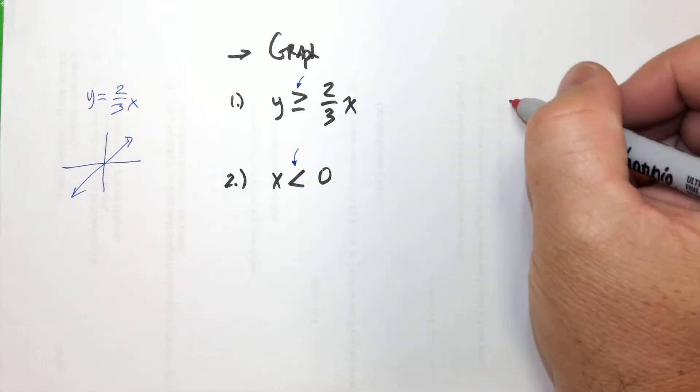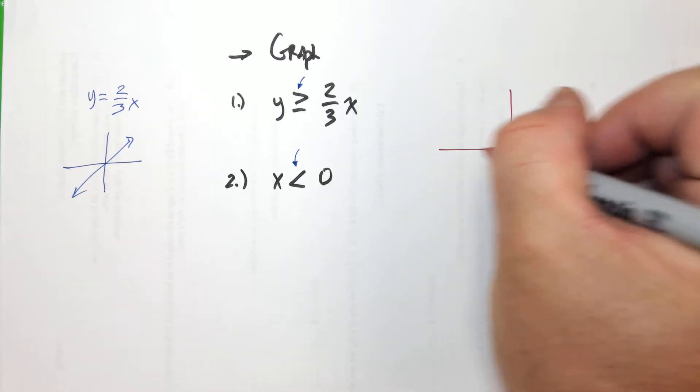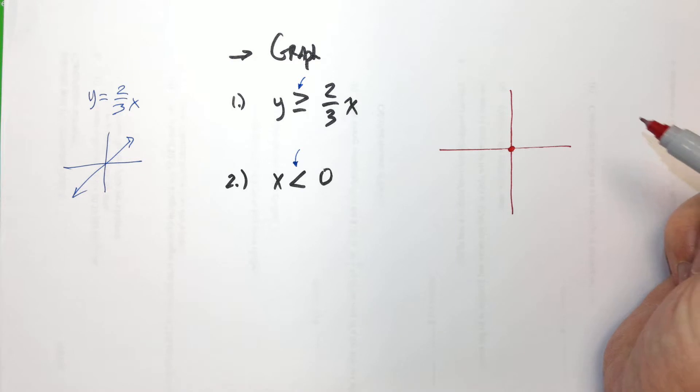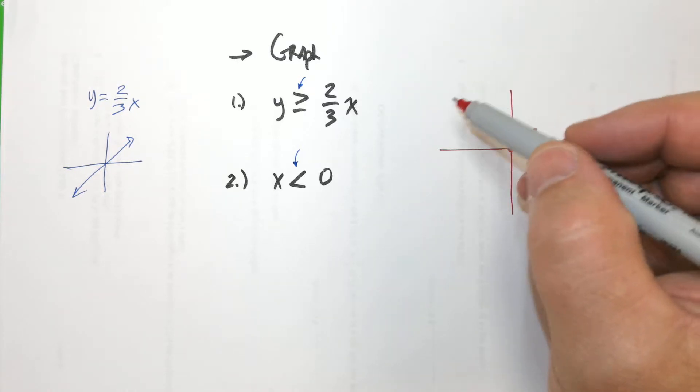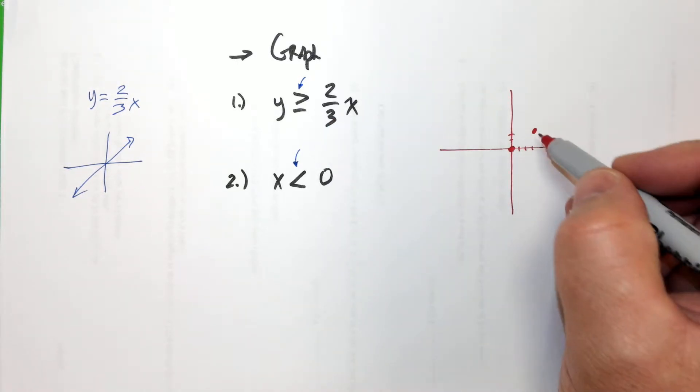This first one right here. The y intercept is zero, right? And it's going to be up two, so you're going to go up two and then over one, two, three. So up two and over three is going to be right there. And it's going to be a solid line, right? Yeah.